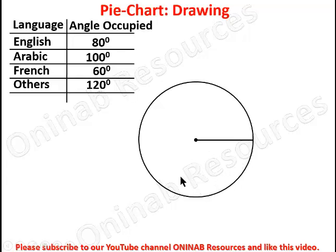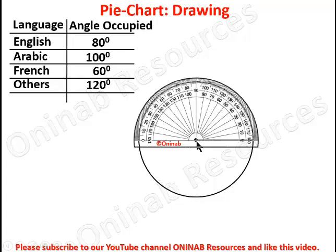We place our protractor so that the horizontal line covers the radius we just drew. The point of intersection of the 90-degree angle and the horizontal line is at the center of the circle. There are two calibrations: one counting anti-clockwise from zero — 0, 10, 20, 30 — and another counting clockwise from 180, 170.